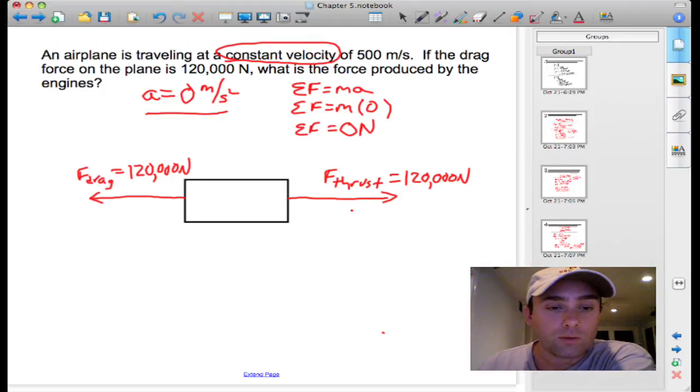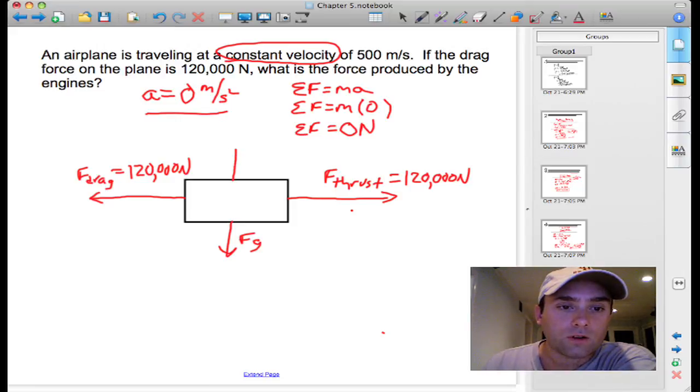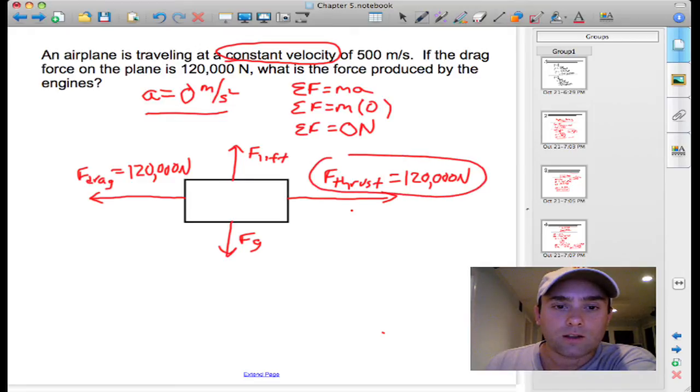Because normally we will draw the other forces that act in the vertical direction, things like the force of gravity and the lift force. But it's important to note that these two forces are actually in balance. It's not saying the plane is ascending or descending. So we don't really care about these right now because they're not affecting the forces in the horizontal direction. Okay, so this is the answer to the problem: 120,000 newtons.